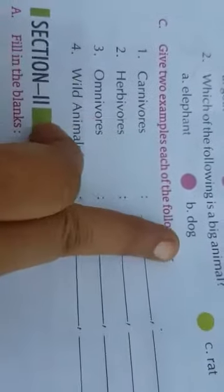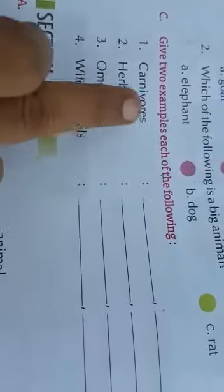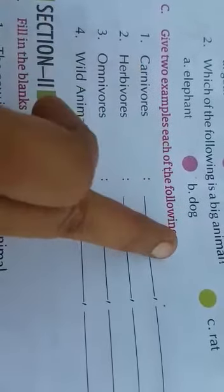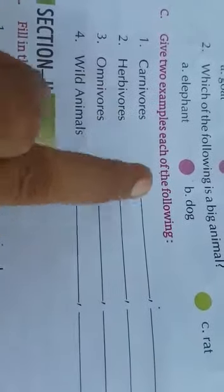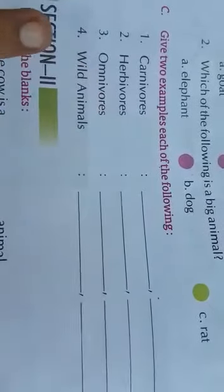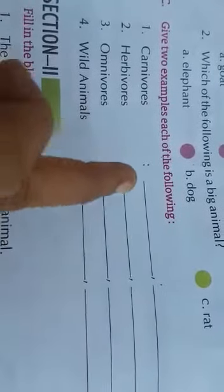Now today you will do it yourself. Give two examples of each. Carnivores means jo flesh khate hain — vo do animals bataane hain. Herbivores means jo plants khate hain — uske do examples bataane hain. Omnivores means jo plants bhi khate hain aur flesh bhi — vo do animals bataane hain. So today you will do these questions.